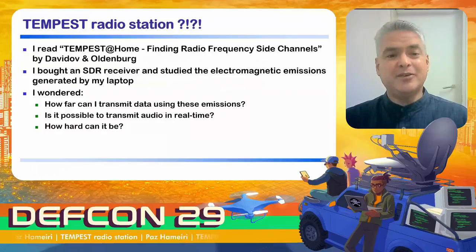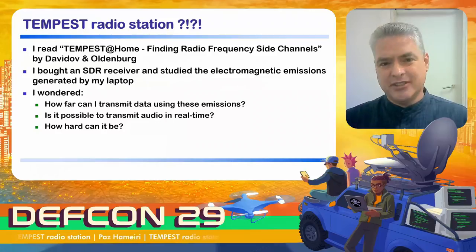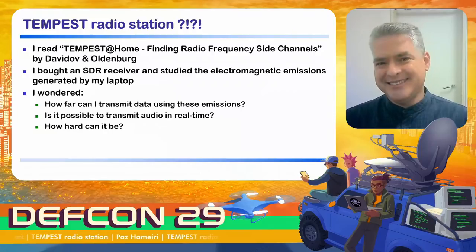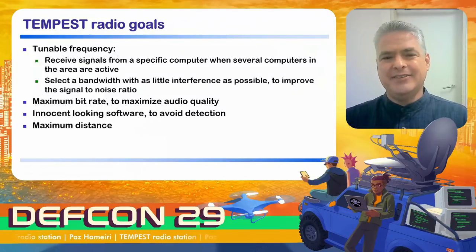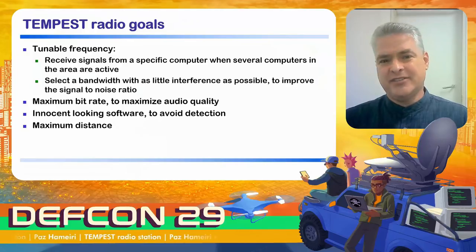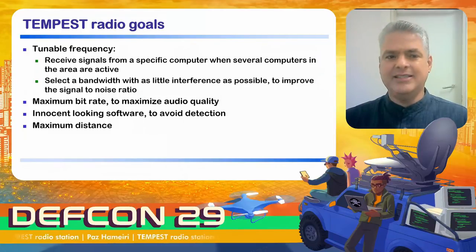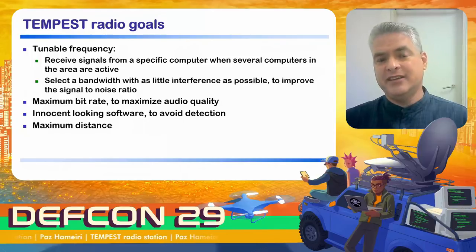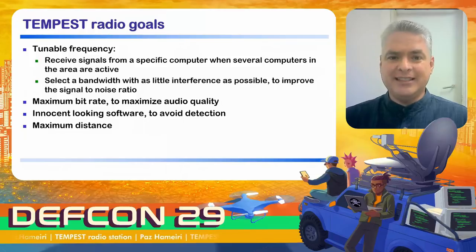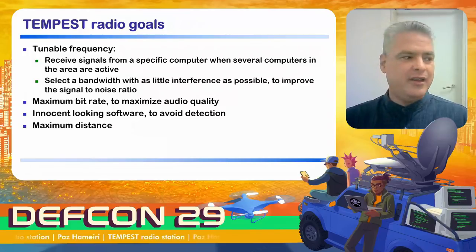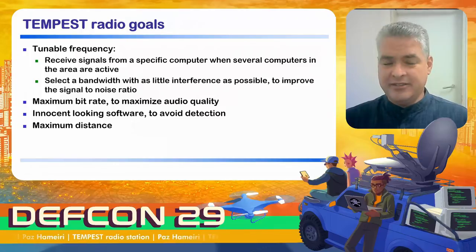To figure it out, I decided to start the Tempest Radio Station project — transmitting audio in real time using these emissions. First I defined the project goals. The first goal was tunable frequency, which is very important because if there are a lot of computers in a single area and I want to extract data from one computer, I need to separate the data it is transmitting from the others. I need a dedicated frequency per computer, very similar to radio stations where each station has its own frequency.